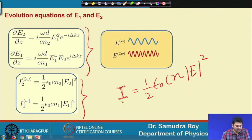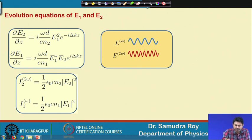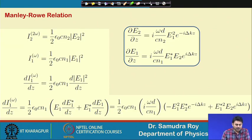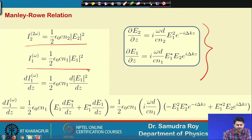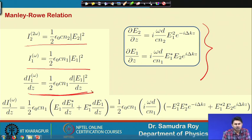Today we will learn that if I₂ and I₁ are the intensities related to E₂ and E₁, then what is the relationship between I₂ and I₁. This relationship is basically called the Manley-Rowe relation. This is the mother equation — these two coupled equations are always there. Now, the next step is to make a derivative with respect to Z of I₁.